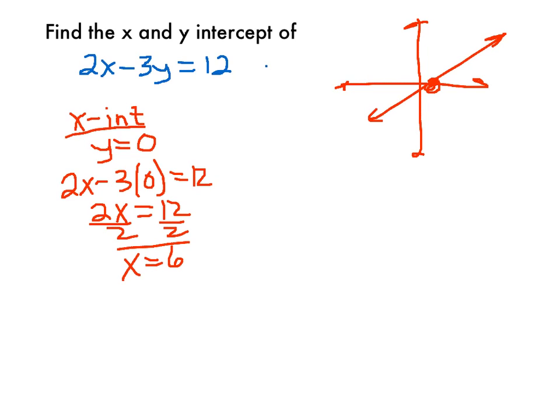Just for an example, whenever you have an x-intercept, your y-coordinate is going to be equal to 0. So you plug that in, you get x equals 6, so the point (6, 0) is going to be my x-intercept.